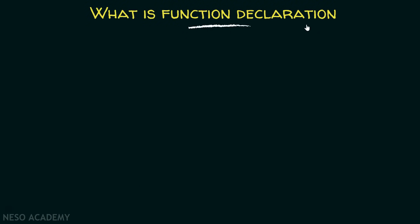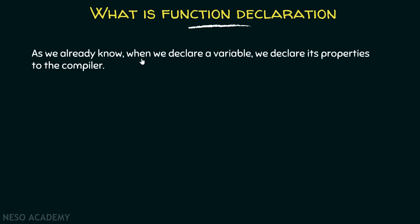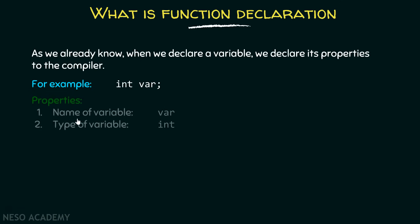What is function declaration? As we already know, when we declare a variable, we declare its properties to the compiler. For example, this is the way we declare a variable. The name of the variable is 'var' and the type of the variable is int, that is integer.